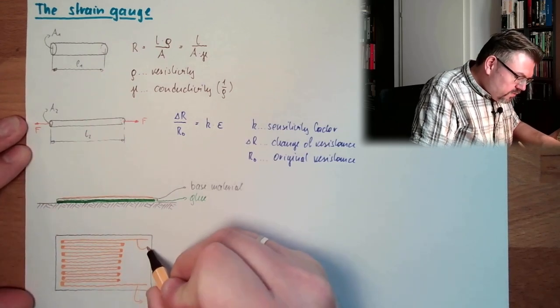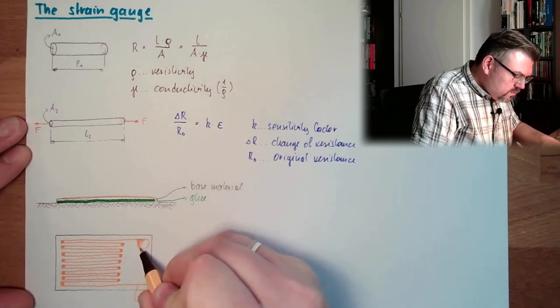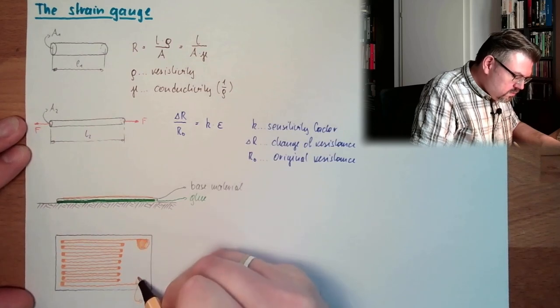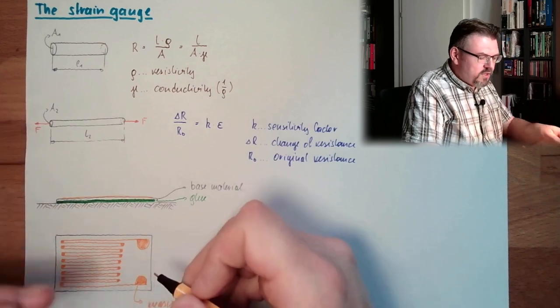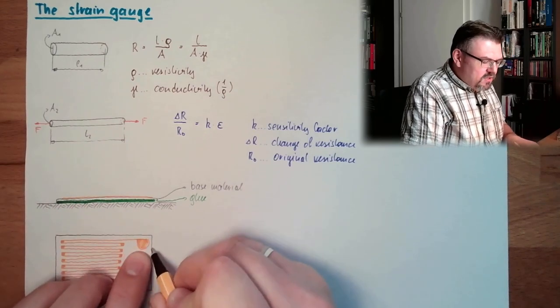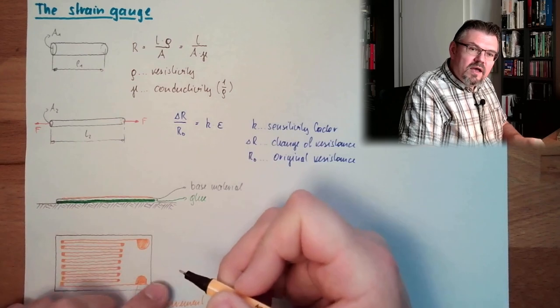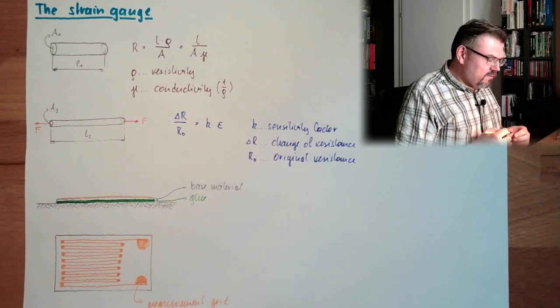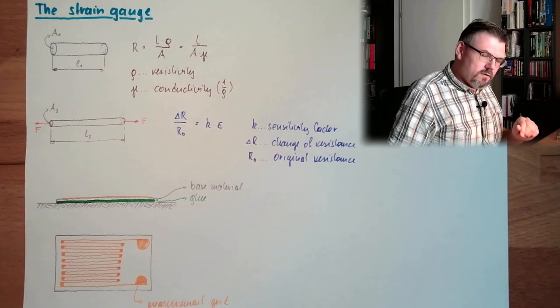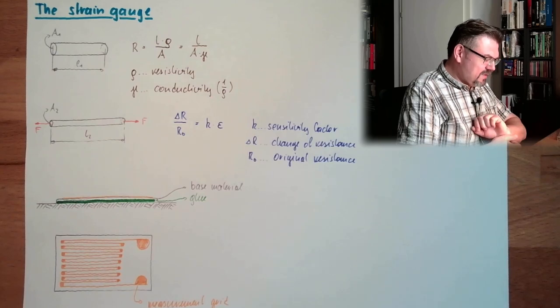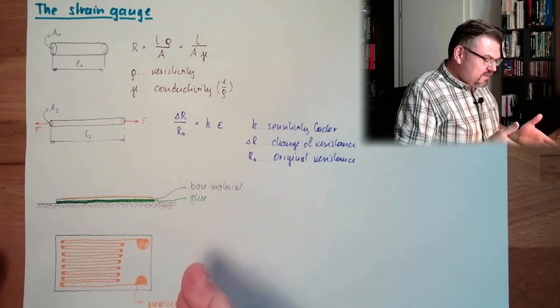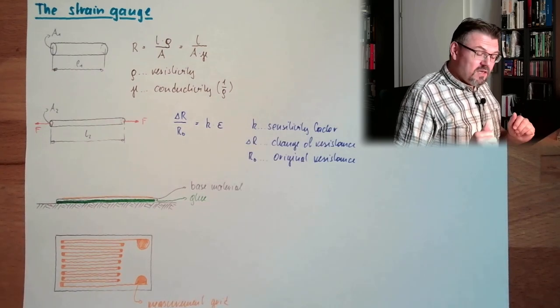And here we have some connection. Connection pad. Here we can connect. Sometimes it's even outside. So there you can weld something. And that's it. That's actually what is necessary for measurement.